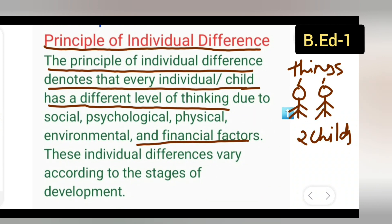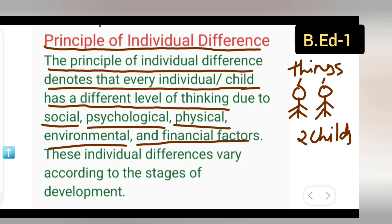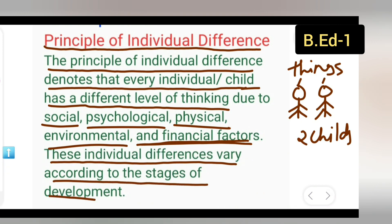Do bacche ek hi tarah nahi soch sakte — unki thinking alag alag rahegi. Due to social, psychological, physical environment, and financial factors, jo bhi bacche hain, unki thinking alag alag rahegi. Ye individual difference vary karta hai stage of development ke saath — kaise bade hote hain, kis mahaul mein, aur everything.